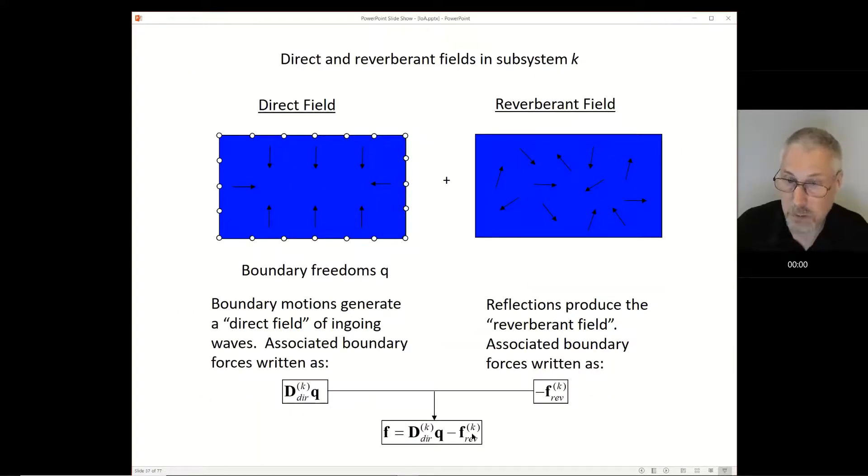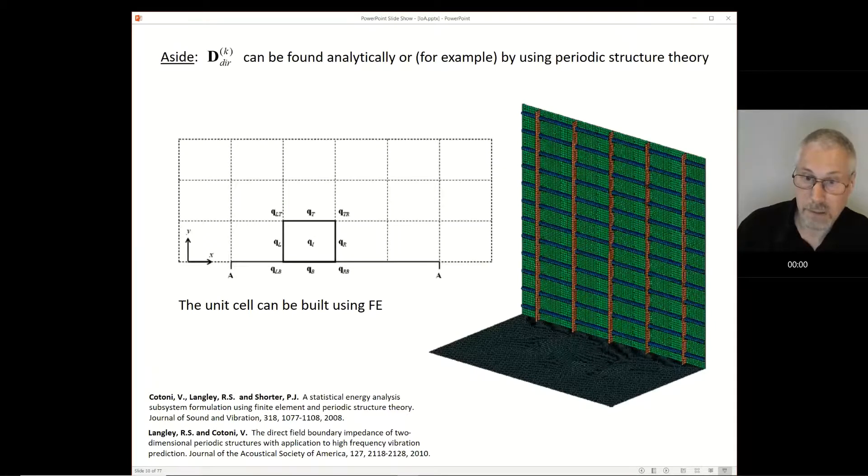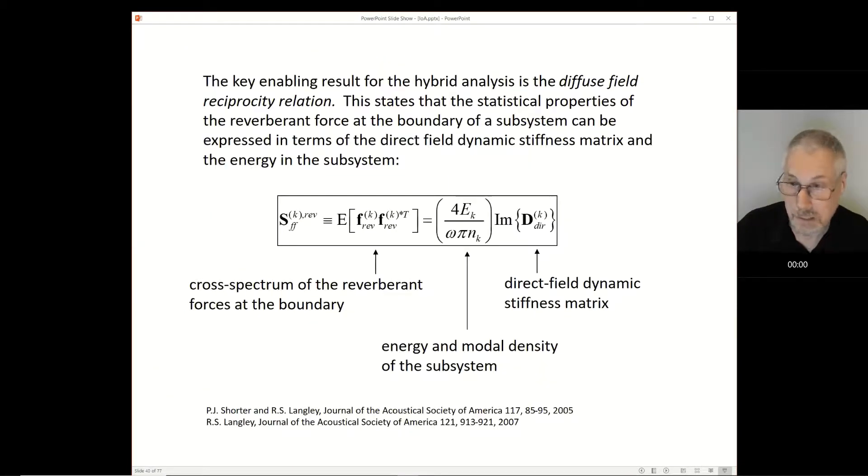Given that we know D-direct, what can we say about F-rev, the reverberant force? Well, the thing is it's random. So what we'd like to say is something about its statistics, for example its mean squared value. Can we say anything about that? It turns out, as amazing as universality, that surprisingly we can say something very general about it. That's that the cross spectrum of the reverberant forces is proportional to the direct field dynamic stiffness matrix. Now we know this, so we know this. Actually I should say there's a constant of proportionality which depends on the energy. So if we know the energy of the reverberant field, we can get these reverberant forces.